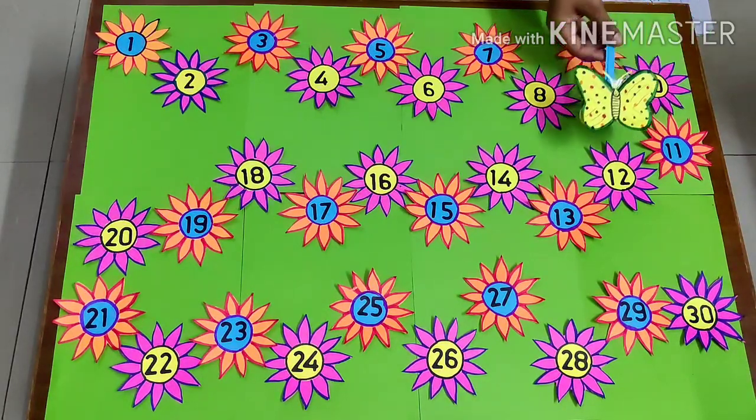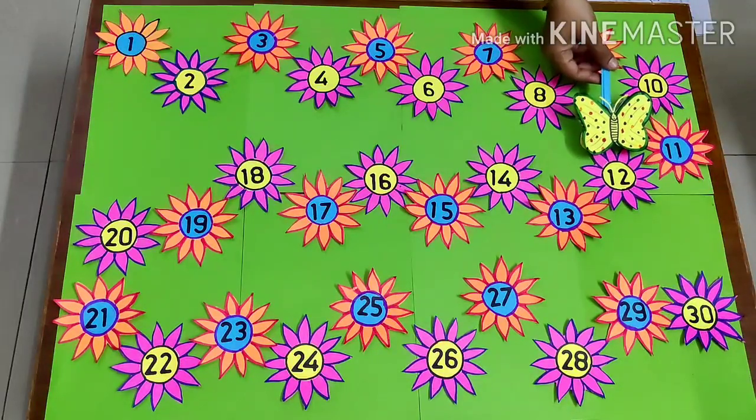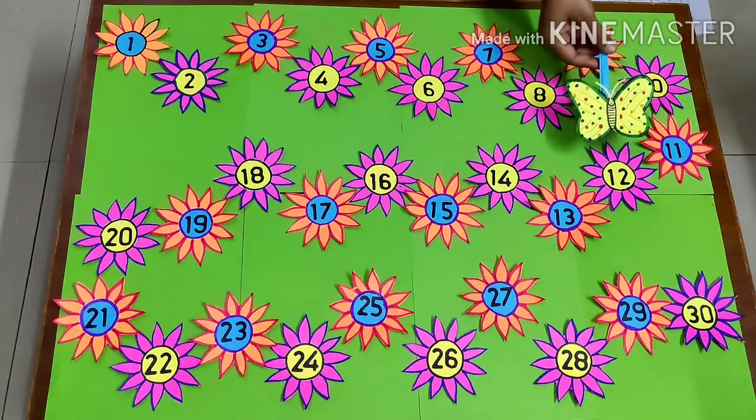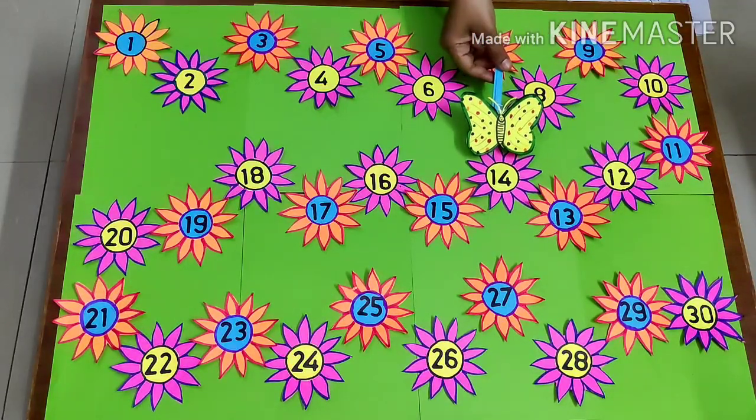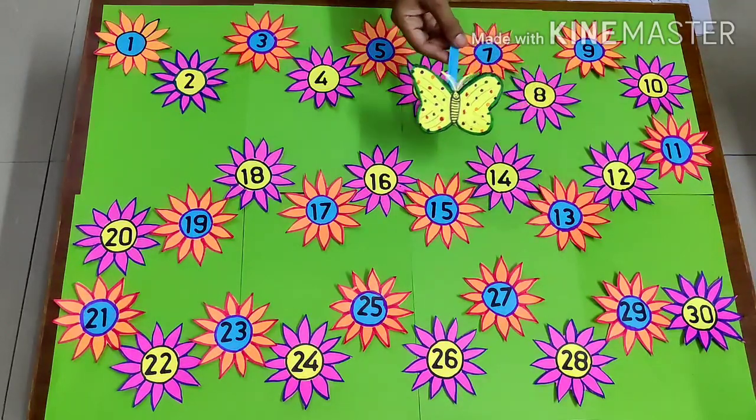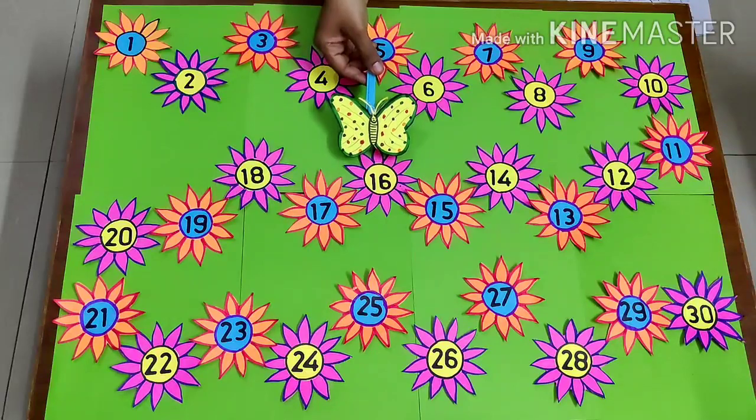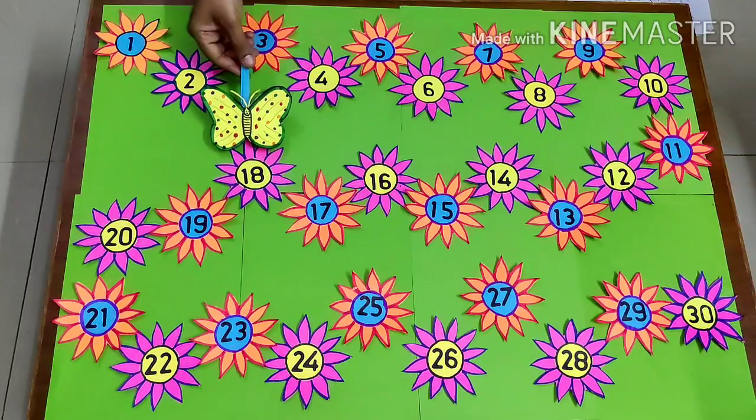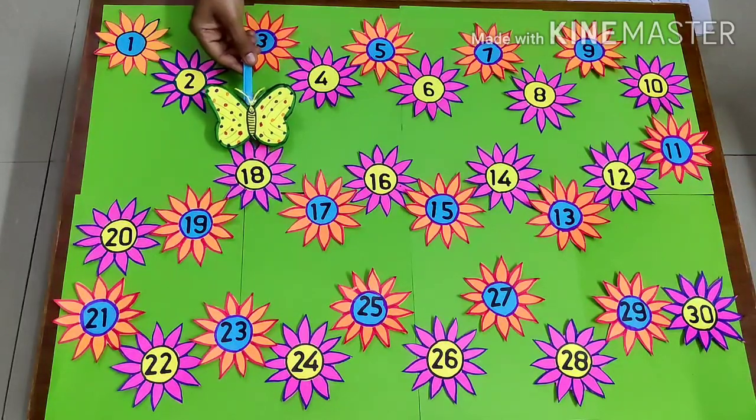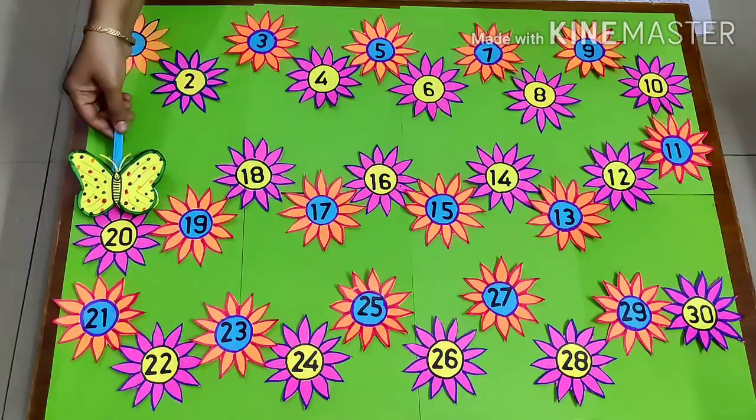From flower number 10, it again flies and sits on flower number 12. After flower number 12, it moves to flower number 14, and then again it flies to flower number 16. From flower number 16, it flies again to flower number 18, and again to flower number 20.